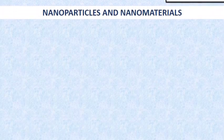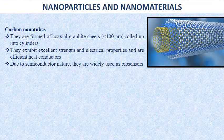The next nanoparticle is carbon nanotubes, formed of coaxial graphite sheets of less than 100 nanometers rolled up into cylinders. They exhibit excellent strength and electrical properties and are efficient heat conductors. There are two types: single-wall carbon nanotubes and multi-wall carbon nanotubes. Due to their semiconductor nature, they are widely used as biosensors.